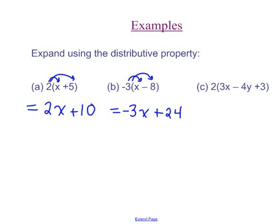So let's look at example C now. So again, same sort of idea. We're going to take the 2, we're going to multiply it by 3X and get 6X. Then we're going to multiply the 2 by negative 4Y and get negative 8Y.